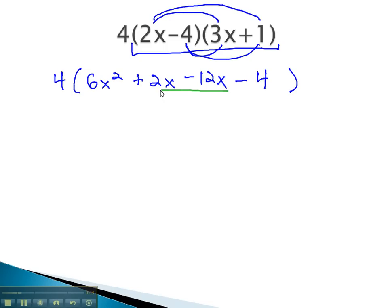We can combine like terms inside that parentheses, so we have 4 times 6x squared, minus 10x, minus 4.